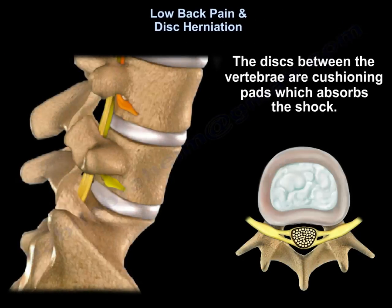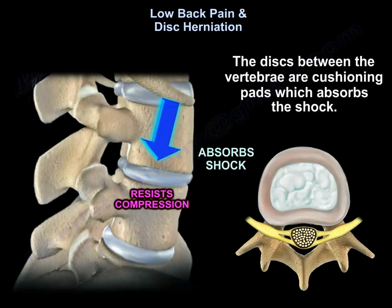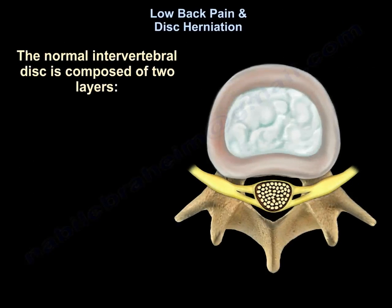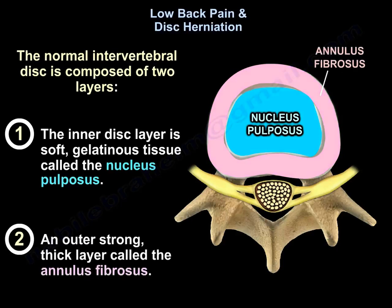The discs between the vertebrae are cushioning pads which absorb shock. In a normal disc there are two layers: the inner disc layer, which is a soft gelatinous tissue called the nucleus pulposus, and an outer strong thick layer called the annulus fibrosus. Here is a picture of the disc with its two components, the nucleus pulposus and the annulus fibrosus.